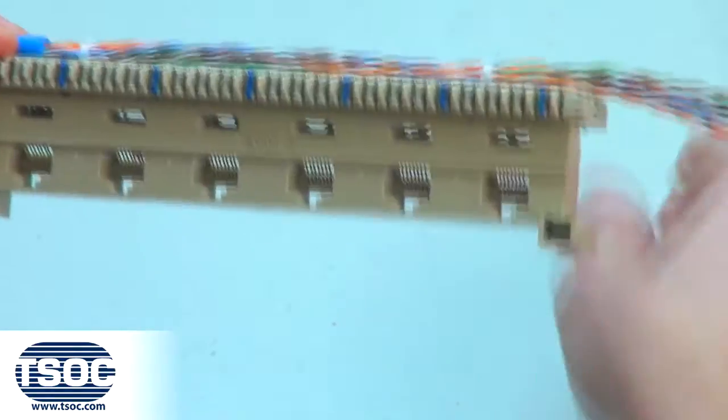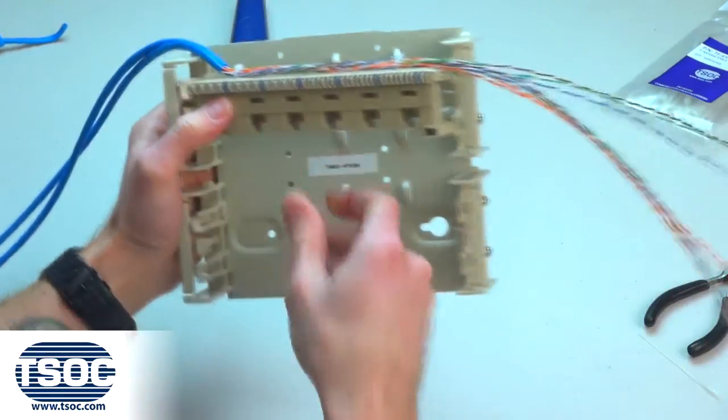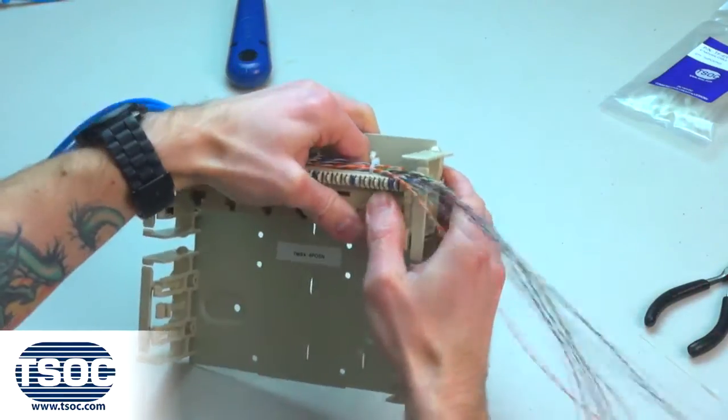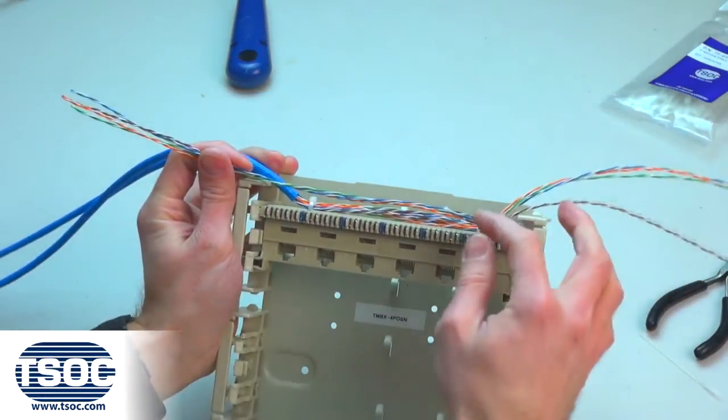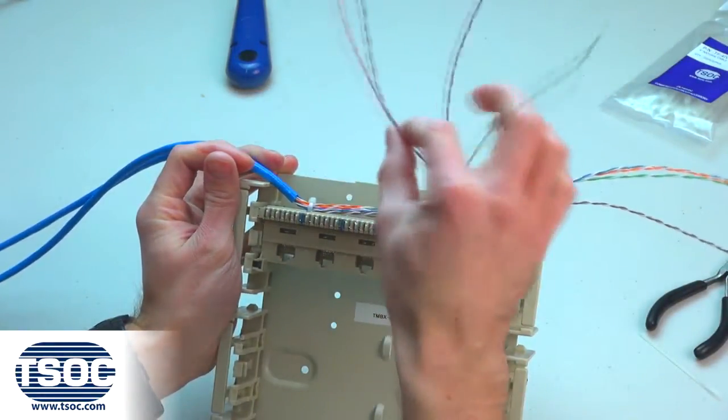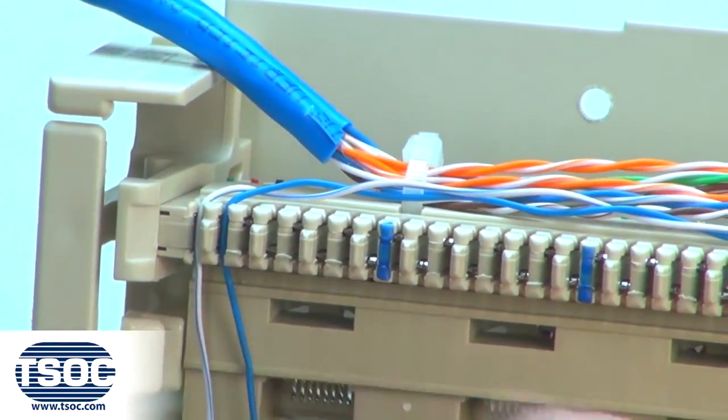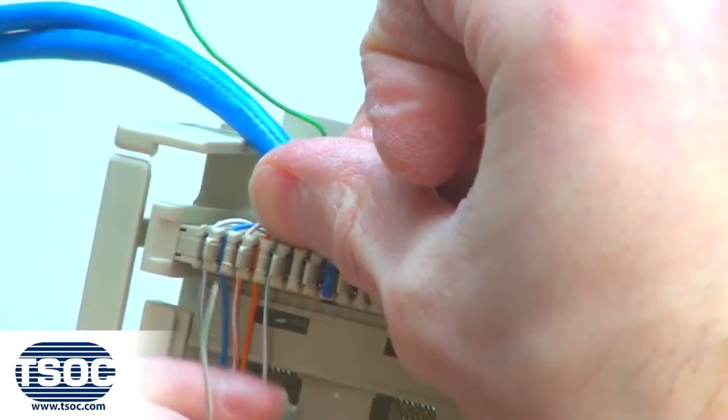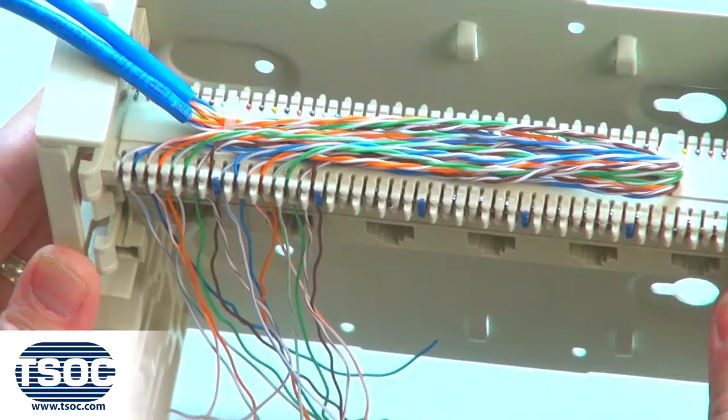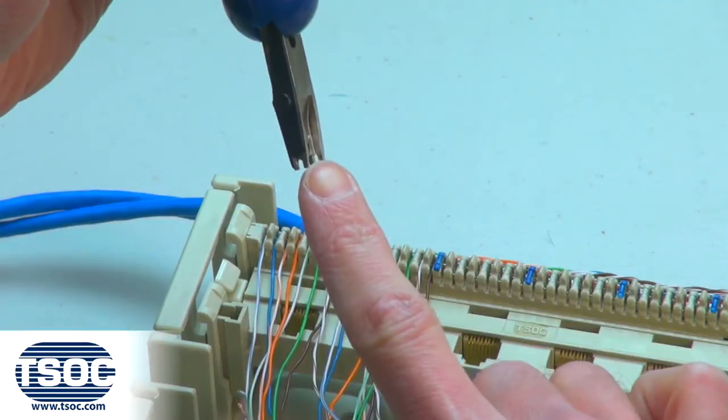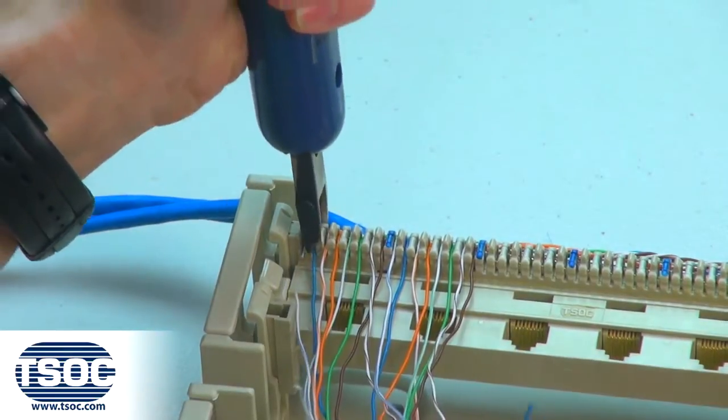Step 4: Install the distribution connector into the 100-pair distribution frame. Separate each pair of the UTP cable and lace into the modular distribution connector according to the required wiring code. Use the impact termination tool to punch down and cut one insulated conductor at a time.